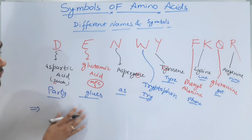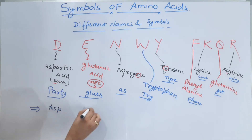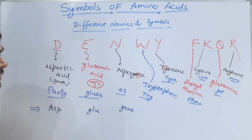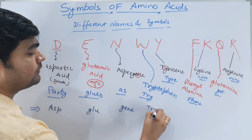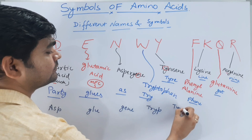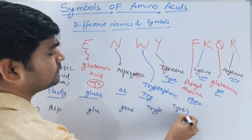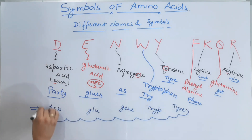The second trick is: 'Asp glue gene — trip — tire.' Asp glue gene, trip, tire. This is a simpler alternative for remembering the Denvi part of the amino acids with different symbols.